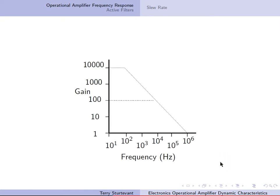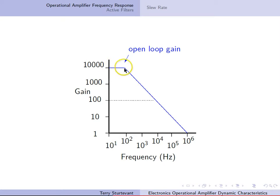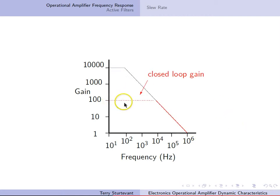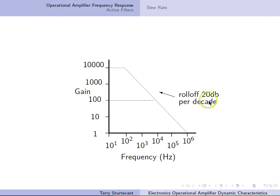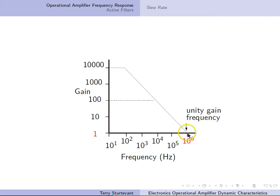The roll-off can be seen in a Bode plot, where gain is shown on a logarithmic scale vertically and frequency on a logarithmic scale horizontally. The open-loop gain is flat for a certain range, then starts to drop off as frequency increases. The closed-loop gain — the gain with feedback — is flat until it intersects the open-loop gain curve, after which it must follow it. The rate of this roll-off is 20 decibels per decade. The frequency at which the gain equals 1 is called the unity gain frequency.